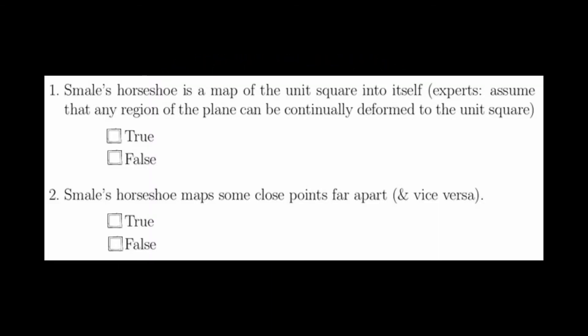The first question asks if Smale's Horseshoe is a map of the unit square into itself, and this is true. In general, Smale's Horseshoe is actually defined on any square in the plane, or any region of a plane that can be continually deformed to the unit square. Regardless, this question is true.